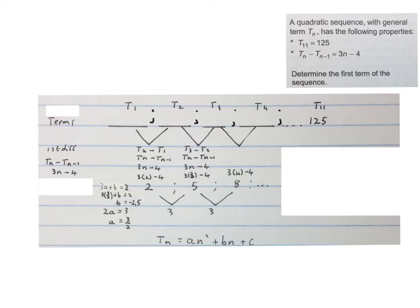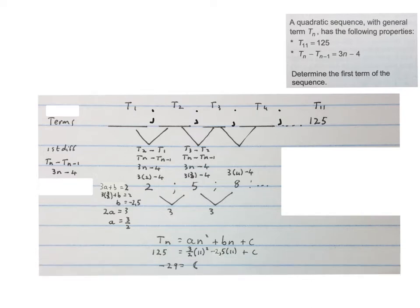So we take our formula of the general term of a quadratic sequence, substitute the a we worked out in there, substitute the b we worked out in there. We know that the 11th term is 125, so I write 125 over here. The n is 11, the n is 11. And now we can work out c. Use a calculator and you get the answer: c is minus 29. Now we have the formula for Tn for this sequence fully worked out, and I can work out anything I want from here.